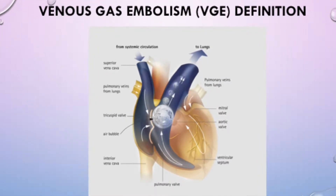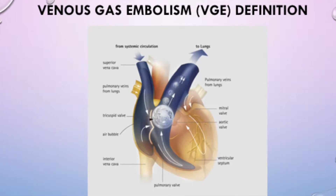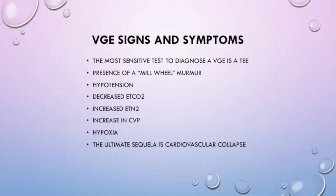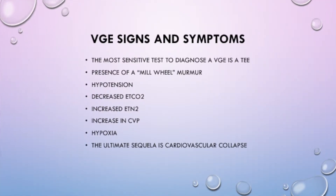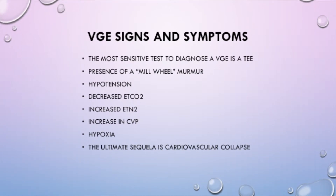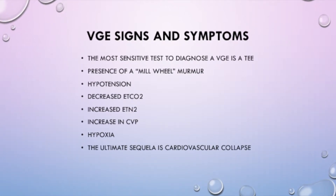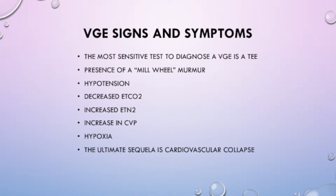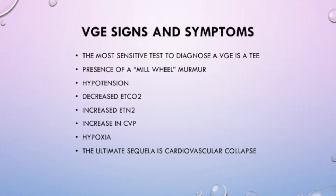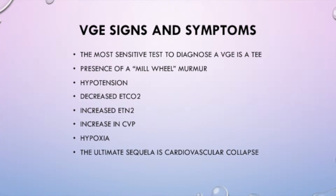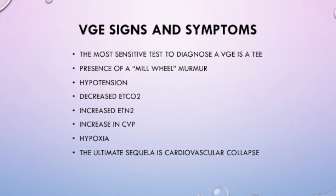There are several signs and symptoms that help to identify when a VGE is occurring. The most sensitive test to diagnose a VGE is a TEE. Other signs and symptoms include presence of a millwheel murmur, hypotension, decreased end-tidal CO2, increased end-tidal nitrogen, an increase in CVP, hypoxia, and the ultimate sequelae is cardiovascular collapse.